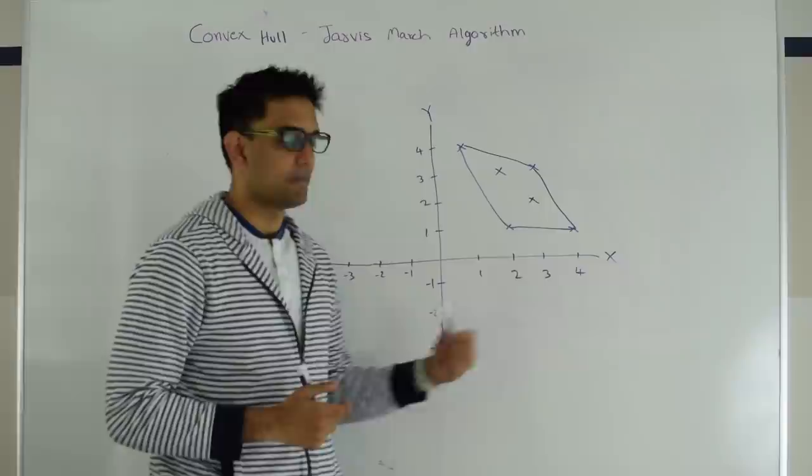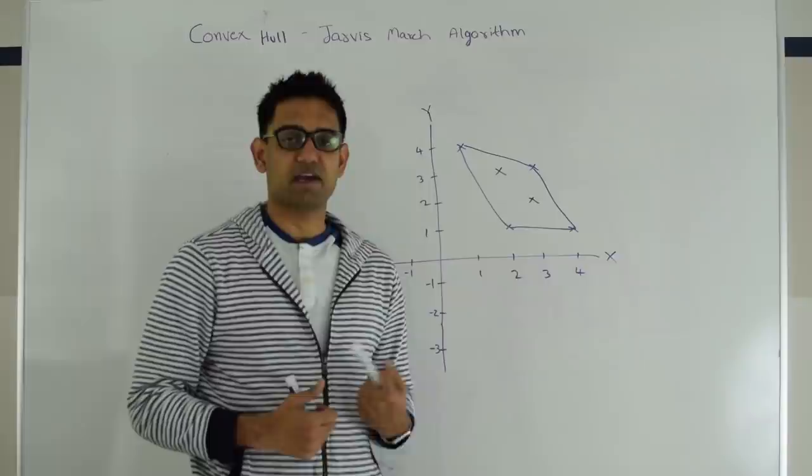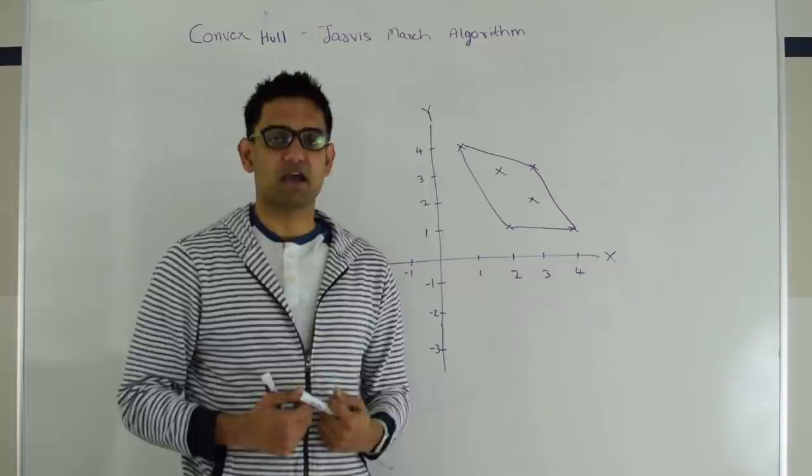There are a bunch of algorithms to solve convex hull. The Jarvis algorithm is the simplest of them. There are faster algorithms like Graham's algorithm and Chan's algorithm, and hopefully in a future video we can talk about those too. So next let's see how Jarvis March works.